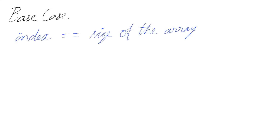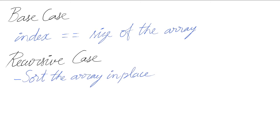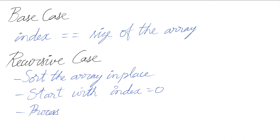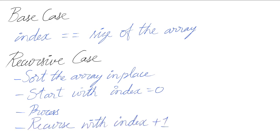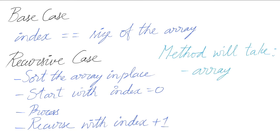So let's write code using recursion. What is the base case? When the index reaches the size of the array, we will terminate the recursion. The recursive case is when we sort the array in place. We will start with index 0 and process by applying the selection sort algorithm. In each recursive call we will scan through the array and recurse with the index incremented by 1, moving towards the base case. The method will take two parameters: the first is an array, and the second is the index.